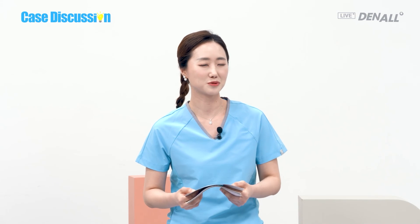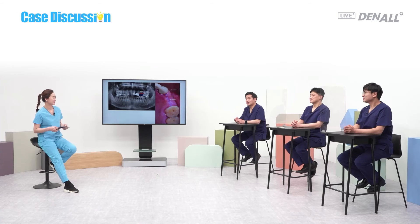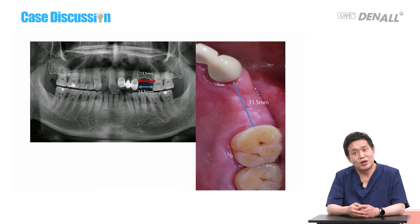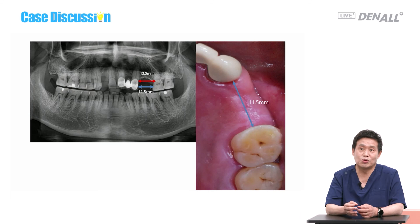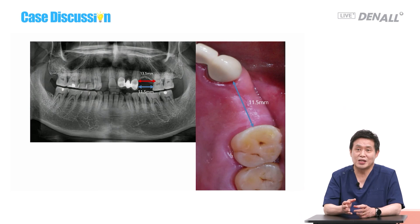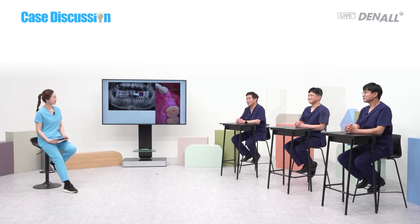Three master dentists have given us good advice. Going back to the case under discussion for final remarks: considering the 11.5 mm space, placing two 3.5 mm implants would not be easy. Placing one implant at number 5 with a mesial cantilever would be a good option.